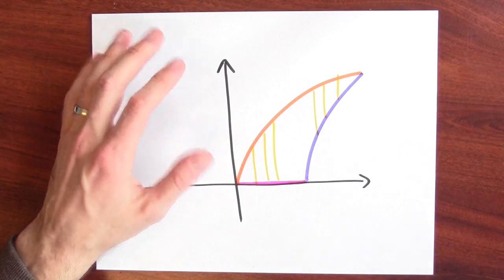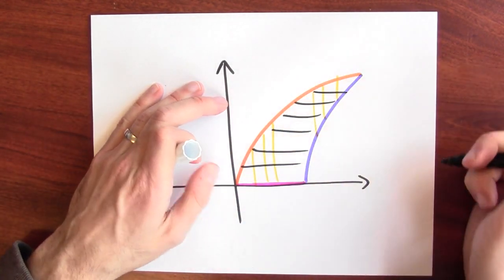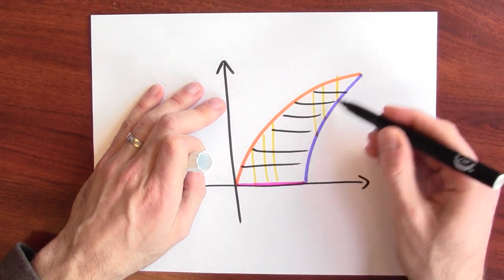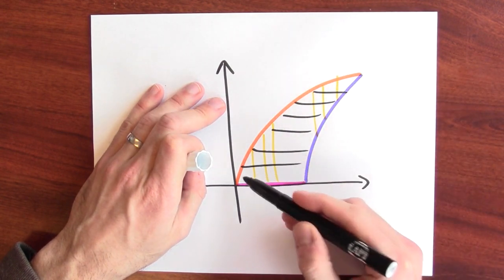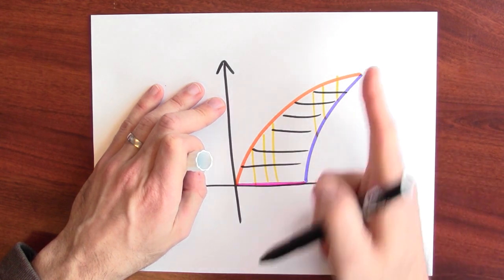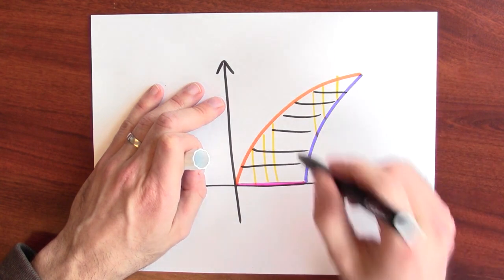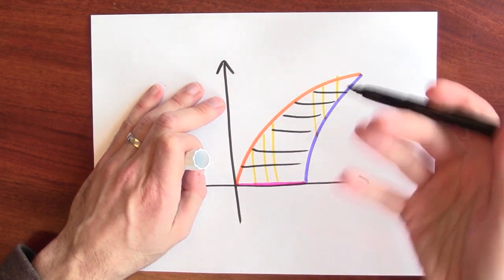Contrast that with the much better situation that happens if I cut this up into horizontal strips. All of my horizontal strips have an orange side and a blue side. I only have one type of horizontal strip. So I should calculate the area of a region like this using horizontal strips. Let's take this advice and apply it to solve a specific problem.